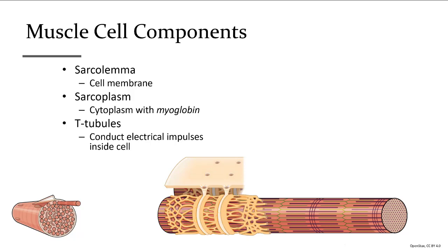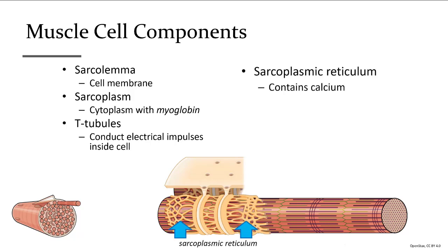The sarcoplasmic reticulum contains calcium and is like a calcium pouch wrapped around each cylindrical myofibril. It is the release of calcium out of the sarcoplasmic reticulum that activates the muscle to start contraction, and relaxation occurs when the calcium is returned back to the sarcoplasmic reticulum.